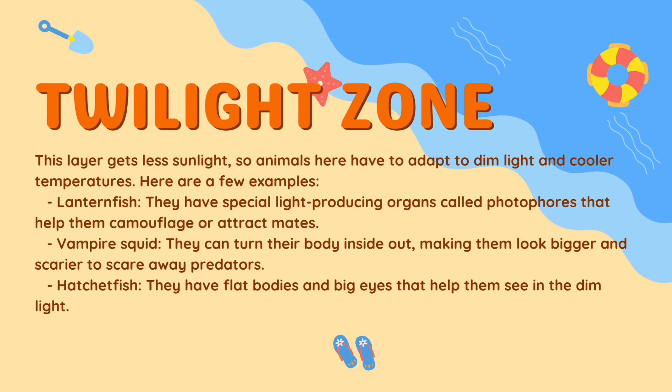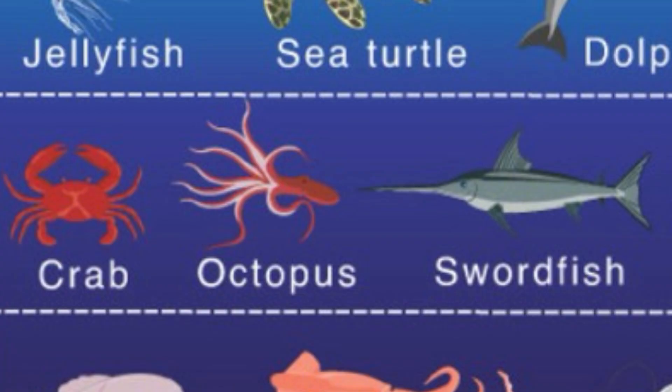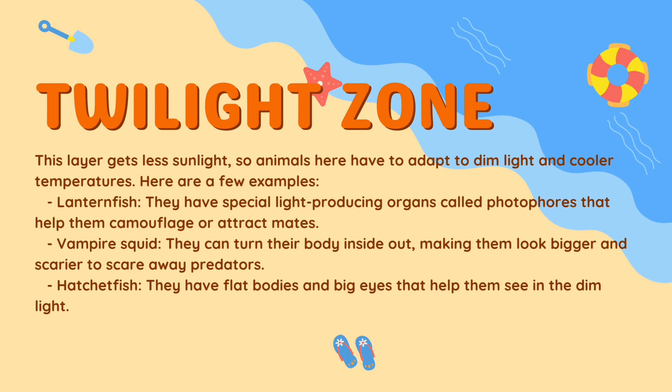Next is the twilight zone. This layer gets less sunlight, so animals here have to adapt to dim light and cooler temperatures. Lanternfish have special light-producing organs called photophores that help them camouflage or attract mates. Vampire squid can turn their bodies inside out, making them look bigger and scarier to scare away predators. Hatchet fish have flat bodies and big eyes that help them see in the dim light.